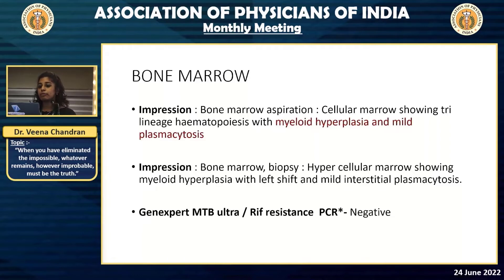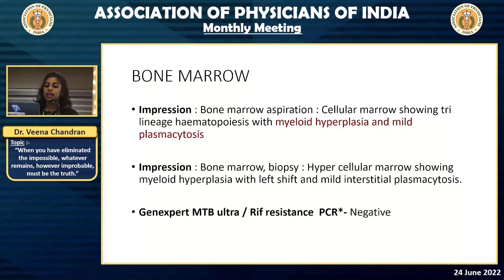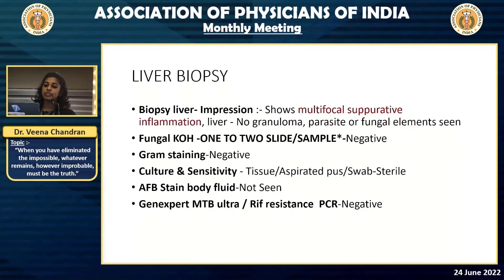In the meanwhile, we had already done a bone marrow aspirate and liver biopsy. Both results came right after the PET. Bone marrow aspirate and biopsy showed myeloid hyperplasia with mild plasmacytosis. GeneXpert from bone marrow was negative. Liver biopsy showed non-specific inflammation with no granuloma, parasites, or fungal elements. Fungal culture, gram stain, culture and sensitivity, AFP, and GeneXpert were all negative from both liver and bone marrow.